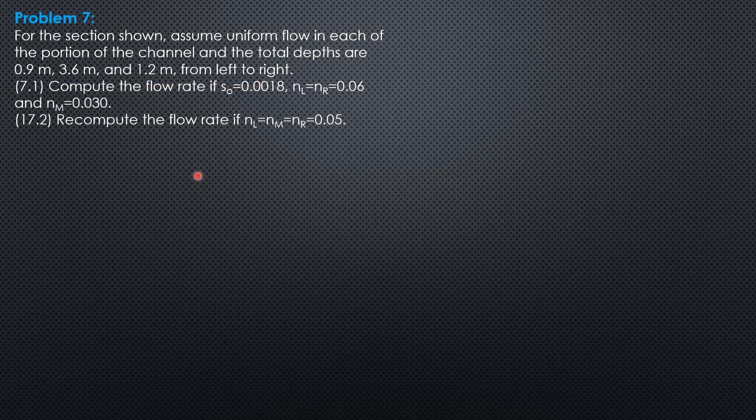Compute the flow rate if the slope of the channel bed is 0.0018, which is also the slope of the energy grade line because we have uniform flow, and therefore also the slope of the hydraulic grade line. The roughness coefficient at the left portion is equal to the roughness coefficient of the rightmost section, 0.06.